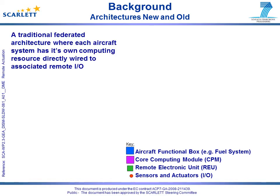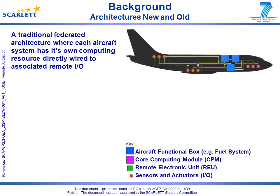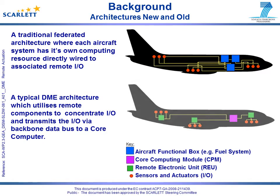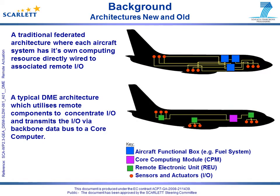Because the number of federated systems on an aircraft has been exponentially increasing, it has become necessary to find a solution to minimize the amount of equipment housed in the electrical equipment bay. A DME architecture uses a common computing resource hosting multiple systems, which are connected to sensors and actuators via a backbone network.